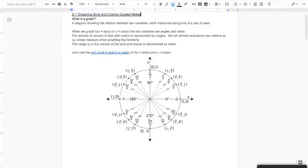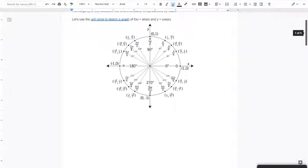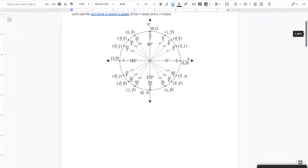So this is a pretty cool GIF if you click on it. But we are going to kind of recreate the GIF by hand right now by graphing sine and cosine. So we're going to use the unit circle to sketch a graph of first f of x equals the sine of x and then y equals the cosine of x.